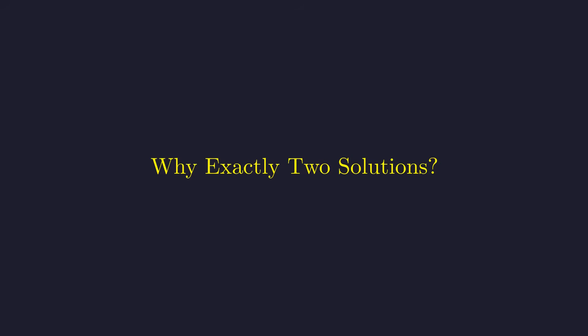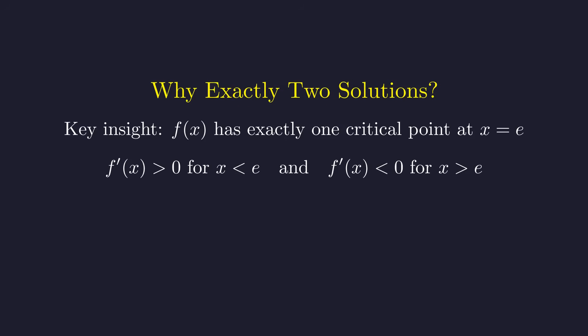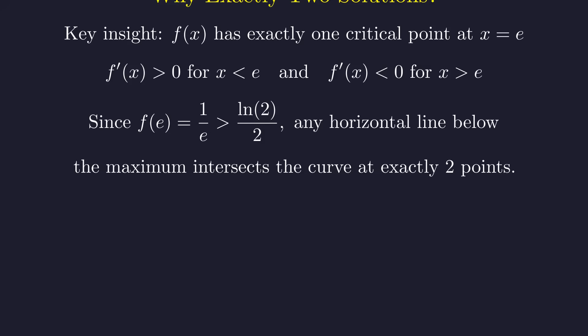Now here's the crucial question. How do we know there are exactly two positive solutions and no more? Here's the key insight from our derivative analysis. The function f of x has exactly one critical point, and we found it at x equals e. This means the function is increasing before e and decreasing after e, making x equals e a global maximum. Since our target value is below this unique maximum, any horizontal line at this height must cross the curve exactly twice. Once on the increasing part of the curve and once on the decreasing part. This completes our rigorous proof that there are exactly two positive solutions.